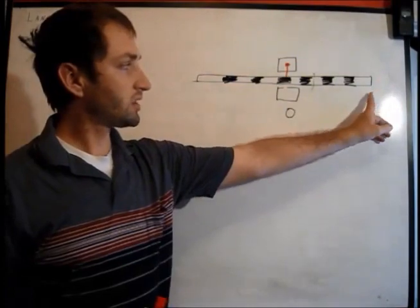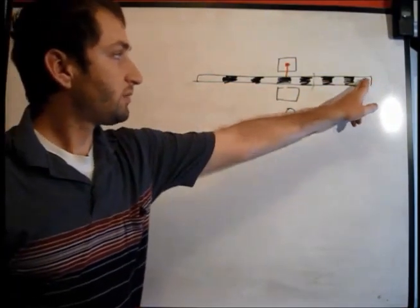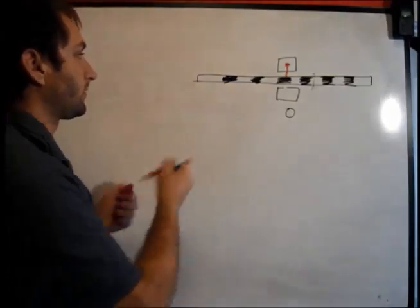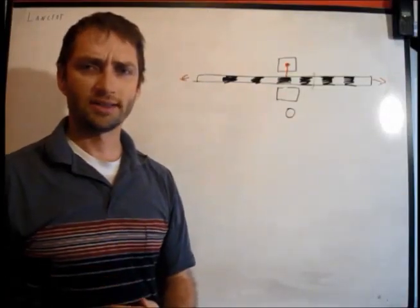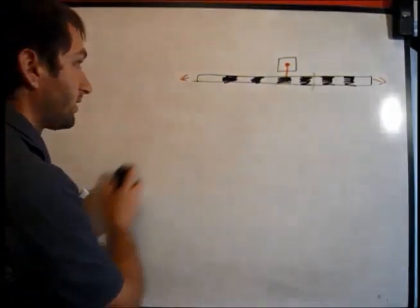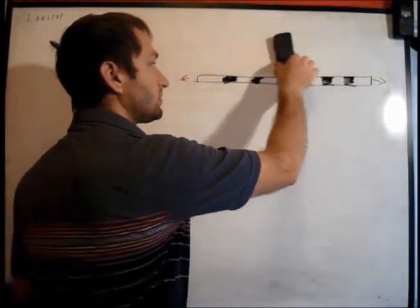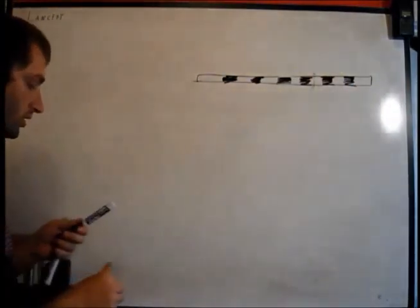Once again, as the scanner is moving, this band will move back and forth allowing you to measure where you are in the scan. Now, for simplicity, I'm going to erase these parts so I can talk more about the encoder.